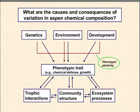The research that my group has been involved with now for several decades with Aspen has been addressing the causes and consequences of variation in Aspen chemical composition. We've been interested in a number of phenotypic traits — growth and chemical defenses in particular — and how a combination of factors such as genetics, environment, and development influence those phenotypic traits. The interaction of genetics and environment is what we know as phenotypic plasticity — different genotypes can express different phenotypes under different environments.